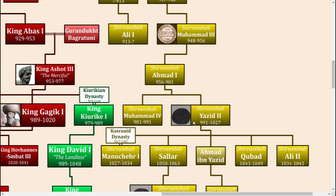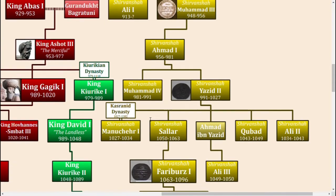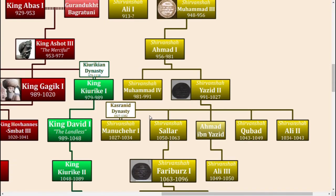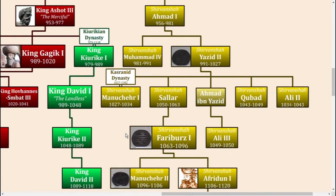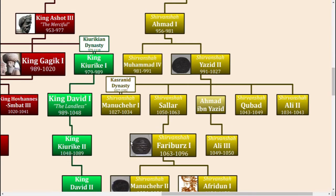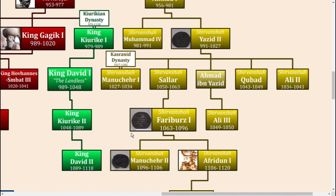After his death, a future dynasty called the Khazranid dynasty was formed, with his eldest son Manu Kher as its first ruler, reflecting the change in culture. During the reign of his nephew Fari Burz the First, Shirvan actually reached the zenith of its prominence and regional power.